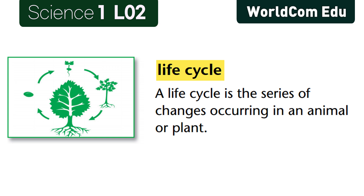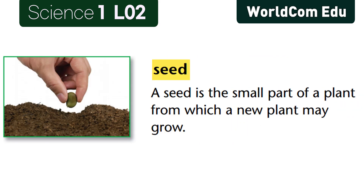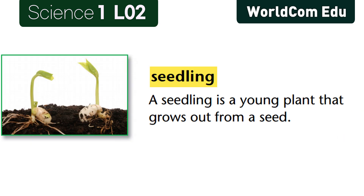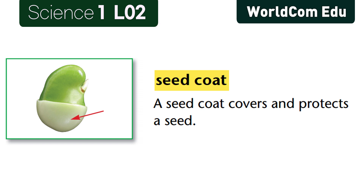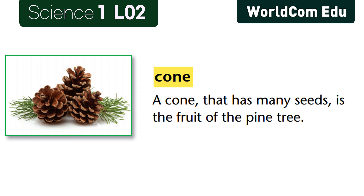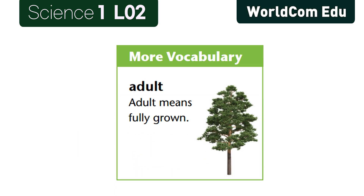Lesson 2: Life Cycle of a Plant. A life cycle is the series of changes occurring in an animal or plant. A seed is the small part of a plant from which a new plant may grow. A seedling is a young plant that grows out from a seed. If a plant or seed sprouts, new leaves begin to grow on it. A seed coat covers and protects a seed. A cone that has many seeds is the fruit of the pine tree. Adult means fully grown.